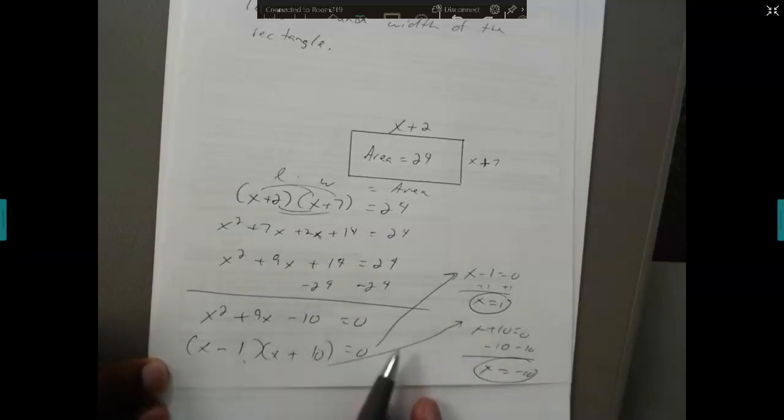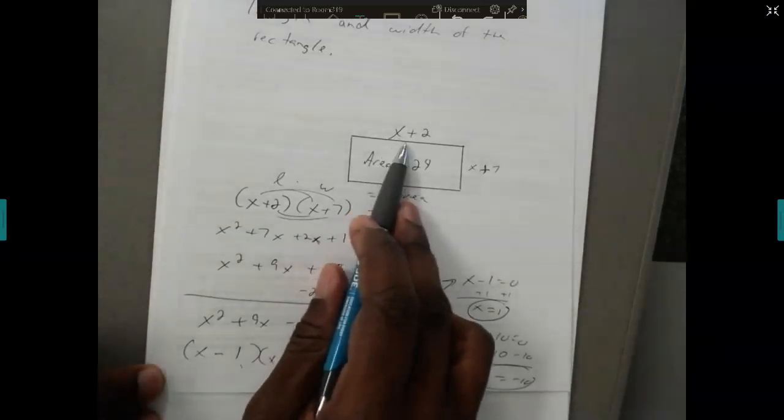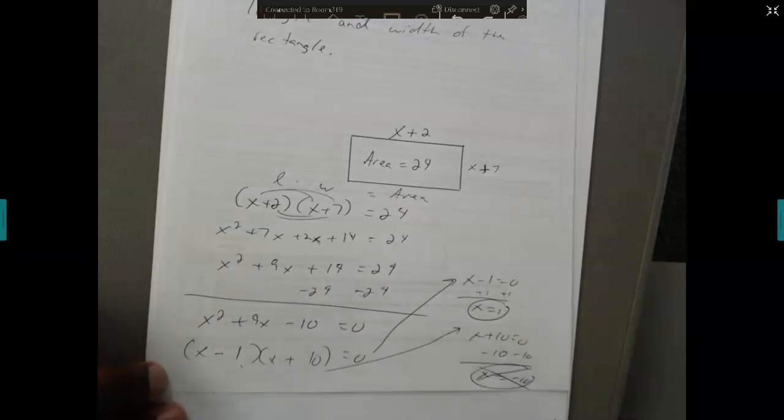The length can't be negative, so if I plug in negative 10, I get a negative 8 there as a length. So I'm going to throw out the negative 10 answer choice. The only answer I like is 1.